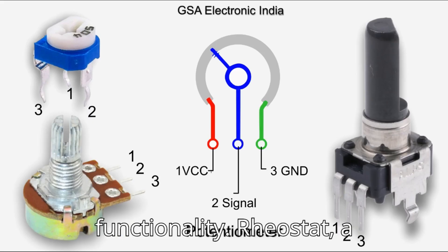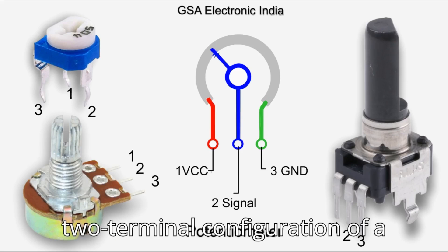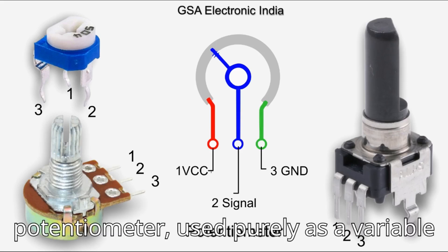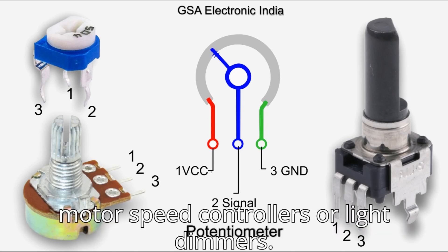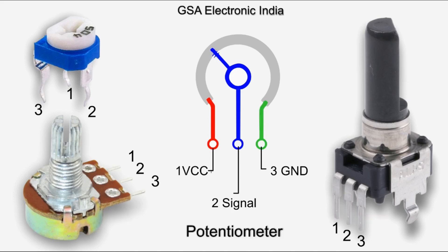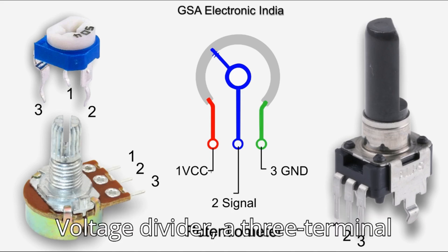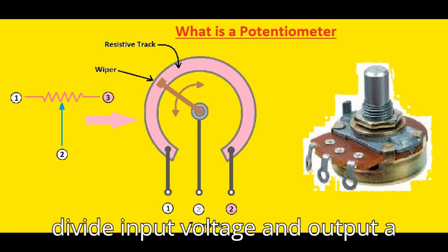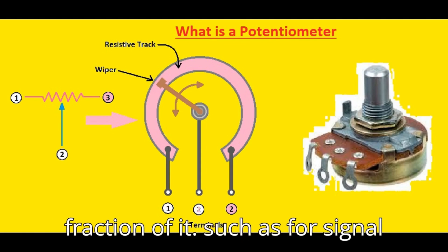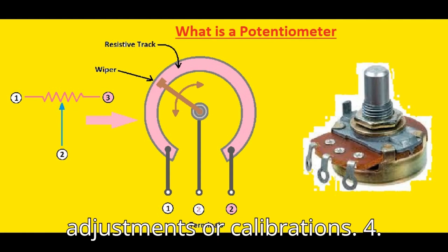Based on functionality: the rheostat is a two-terminal configuration of a potentiometer used purely as a variable resistor to control current, such as in motor speed controllers or light dimmers. The voltage divider is a three-terminal configuration used to divide input voltage and output a fraction of it, such as for signal adjustments or calibrations.